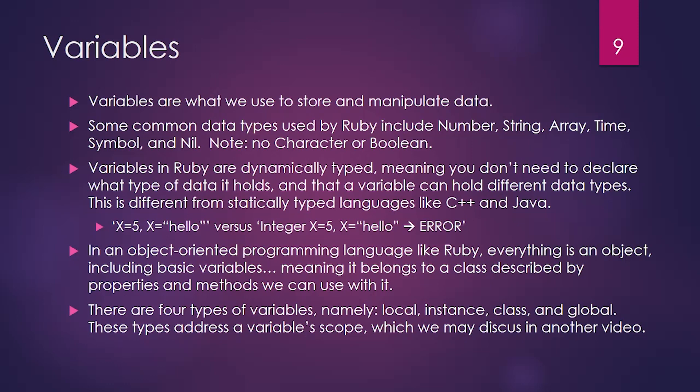I'd like to move on to variables. Variables are what we use to store and manipulate data. Some common data types we're going to use include numbers, strings, arrays, and a whole bunch more. Of particular note if you're coming from other languages: there's no character type and no boolean type — meaning there's no character class or boolean class natively in Ruby. In place of those, you'd probably use string in place of character, and instead of booleans, Ruby has a true class and a false class. We will be discussing boolean expressions a little bit later.